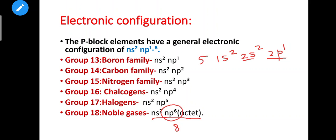With ns2 np6, we have 6 electrons in the P-subshell and 2 in the S-subshell, totaling 8 electrons. With 8 electrons, the octet is completely filled. They are stable, more stable and less reactive. These are the basic properties from simple number theory.